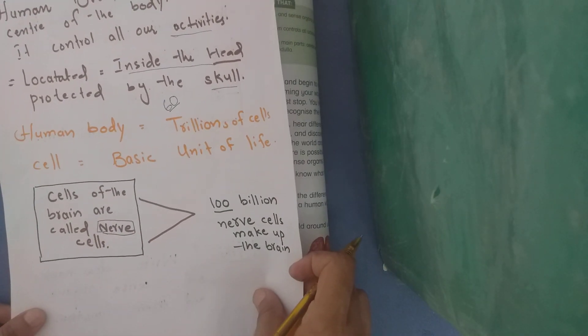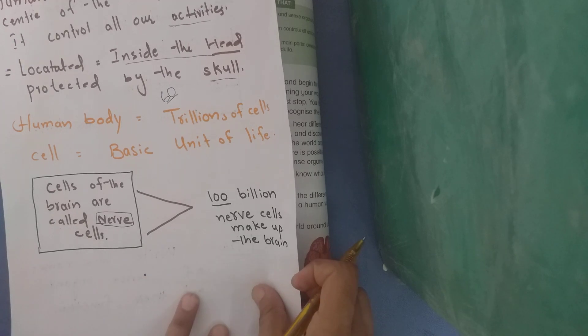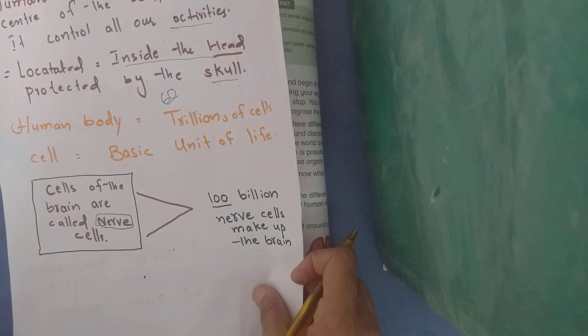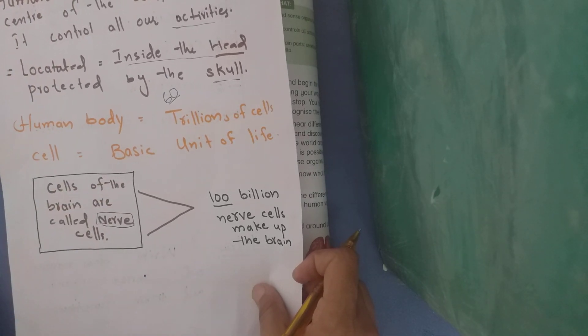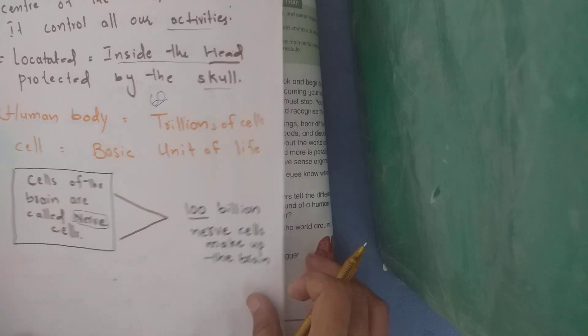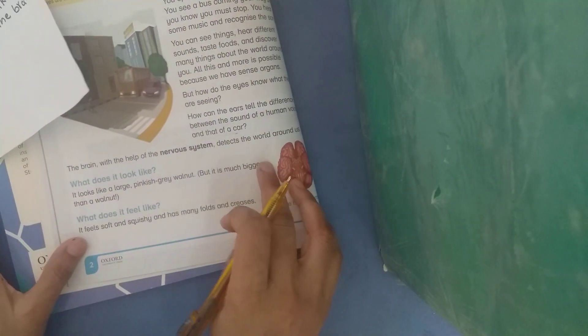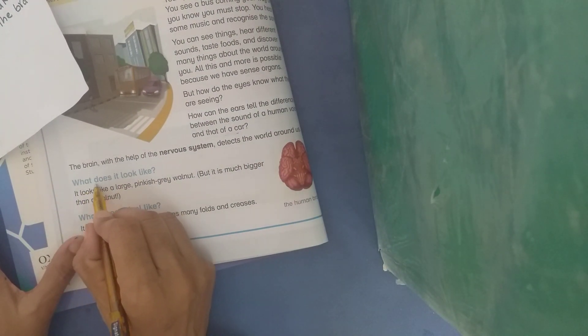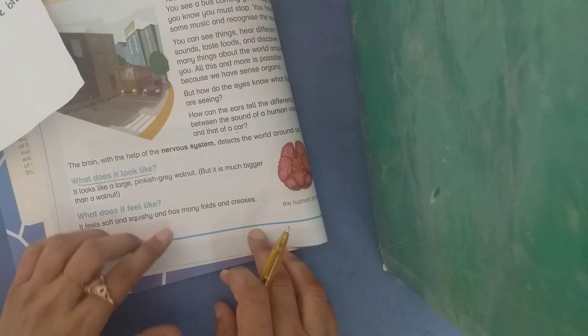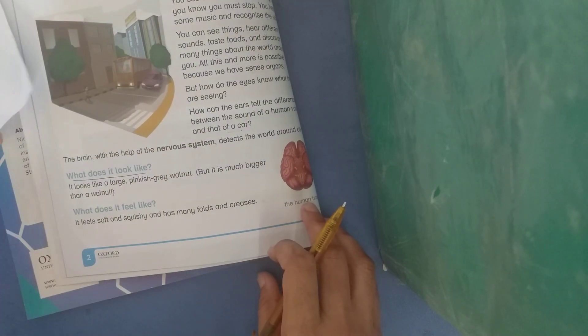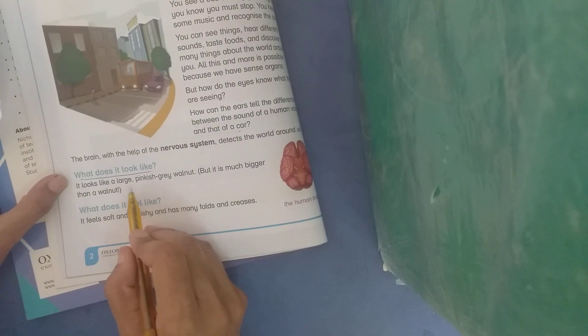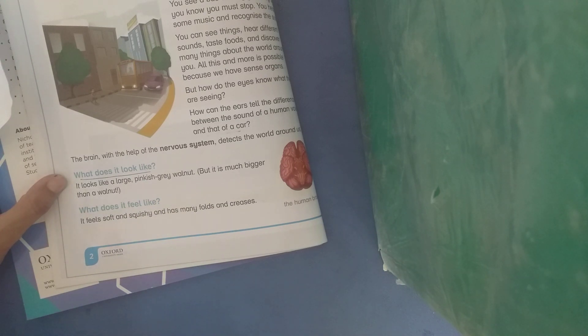The brain contains 100 billion nerve cells. What do you think it looks like? The brain is the control center. It looks like a large, pinkish-grey walnut.